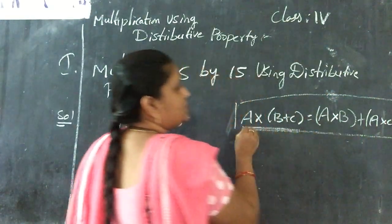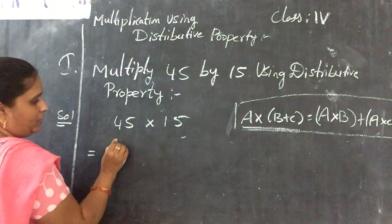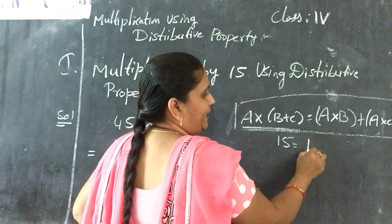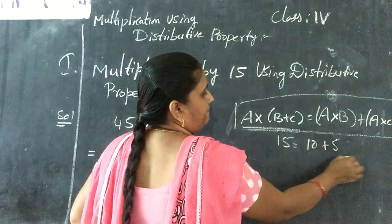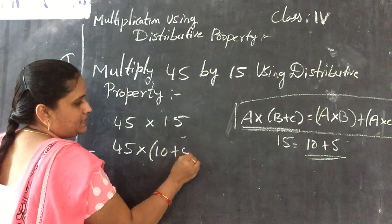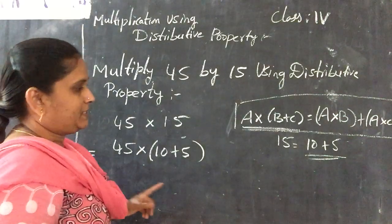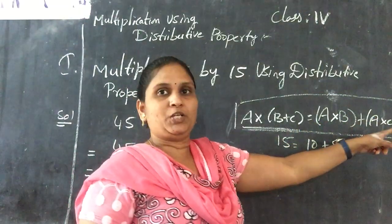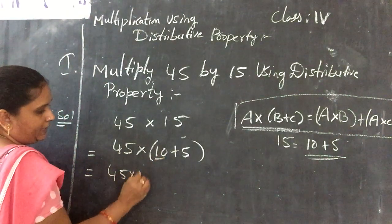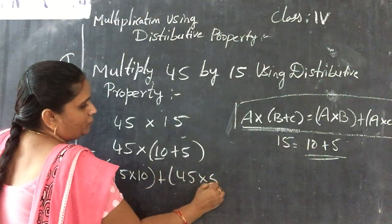So how to do this one? How to implement to our sum? So A is equal to 45 into 15. That 15 we have to divide like 10 plus 5. So write 10 plus 5. Next, what you have to do? After separating then A into B plus A into C. It means 45 into 10 plus 45 into 5.